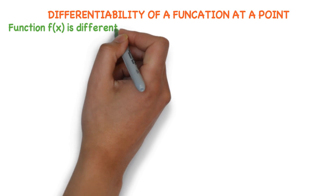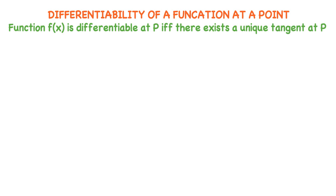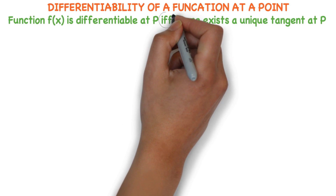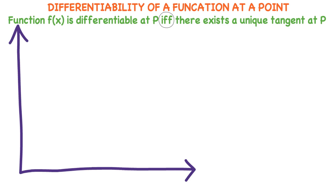Function f of x is differentiable at p if and only if there exists a unique tangent to the curve f of x at p. Throughout this class, I am going to discuss this point only. When a function is differentiable at p, there exists a unique tangent to the curve at point p, then f of x is a differentiable function. This is an if and only if condition.